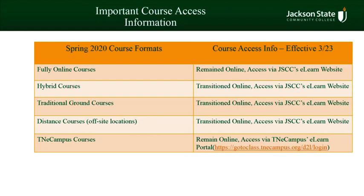If you were enrolled in a distance course offered at one of our off-site locations, your course has transitioned online for the remainder of the semester. You can access your course and materials at the Jackson State Community College eLearn website. If you are enrolled in a T&E Campus course, your course will remain online and you can continue to access it through the T&E Campus eLearn portal at go.class.tnecampus.org/d2l/login.